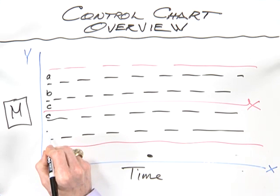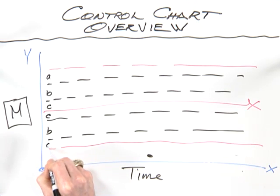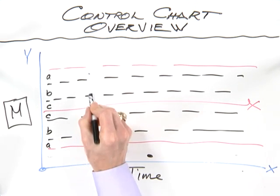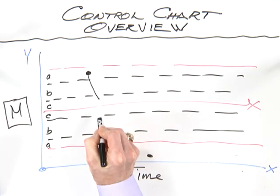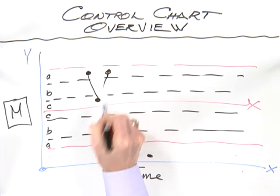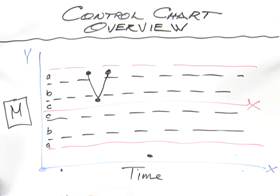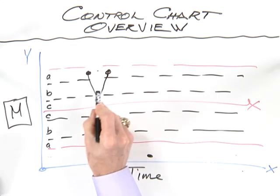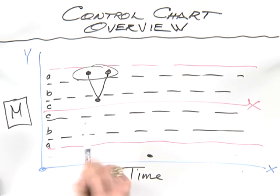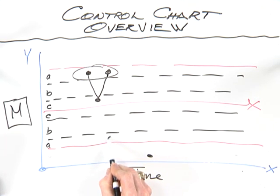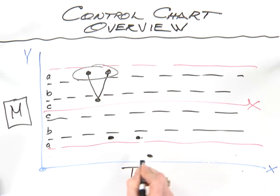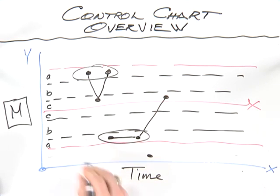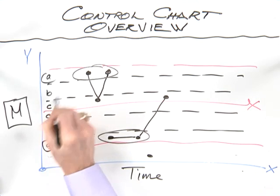The first one relates to how the data array themselves in these zones. I'm going to put the C, B, and A zones on here. When you get two out of three data points in zone A or beyond, that's a signal of a special cause. You still have two out of three in zone A of the chart.